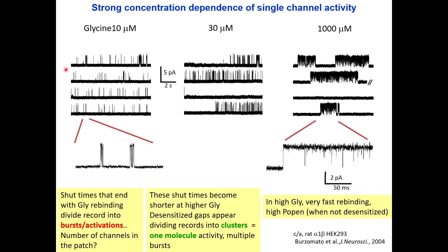This slide shows the concentration dependence of single channel activity for glycine receptors — here these are heteromers. This is a positive quality that makes these channels such a joy to work with in single channel recording. At low agonist concentration, we have openings that are brief, either alone or in groups that we call bursts, and these are separated by long shut times that are the expression of the binding behavior of the channel.